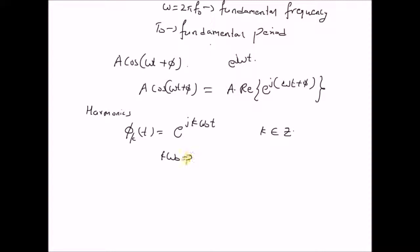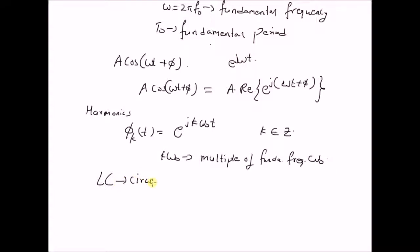Here k·ω₀ is basically a multiple of the fundamental frequency ω₀. A real-world example with pure sinusoids is the response of an LC circuit, given by i(t) equals i₀ times cosine of (ωt + φ), which is very similar to this signal structure.